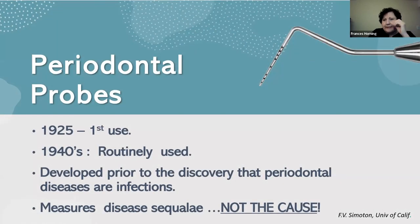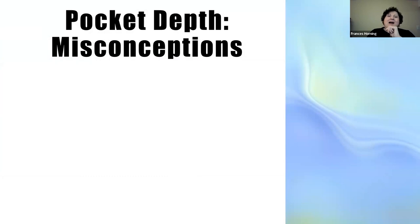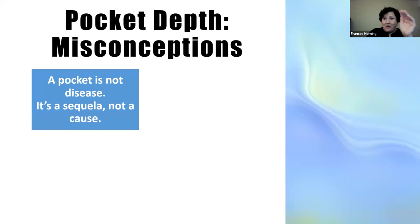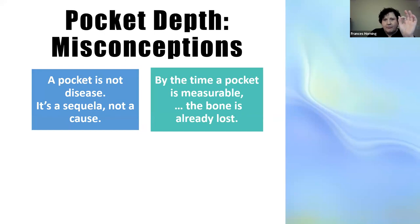Periodontal probing started back in 1925. Bill Landers likes to call the probe a 'notched metal stick' because it's not a good indicator of disease. A pocket is not a disease — it's the sequela of a disease. Nobody is born with a 6-millimeter pocket. Every pocket started at 1, 2, or 3 millimeters. It doesn't automatically become a 6 unless there are other factors — ill-fitting crowns, restorations, or a disease process. By the time a pocket is measurable, the bone has already been lost.